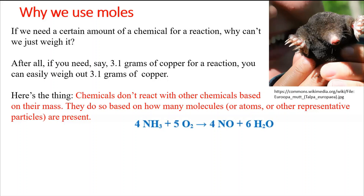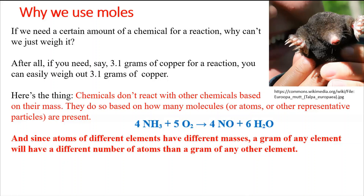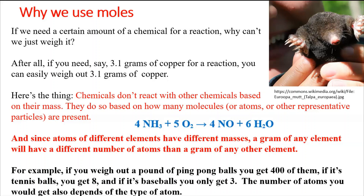For example, in the reaction with ammonia and oxygen gas, it reacts according to how many molecules are present. The mass of oxygen gas is almost double that of ammonia, so weighing them wouldn't tell you how much will react. Atoms of different elements have different masses, so a gram of one element has a different number of atoms than a gram of another — just like a pound of ping pong balls gives about 400 balls, tennis balls gives 8, and baseballs only 3.